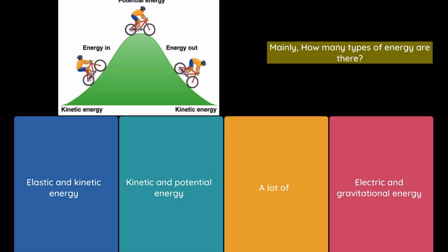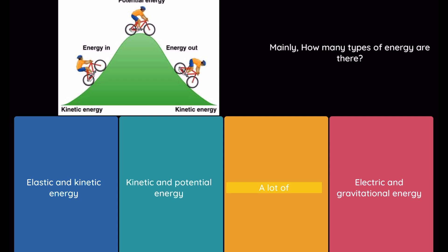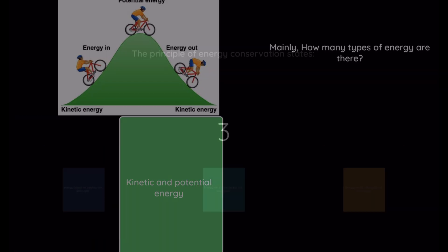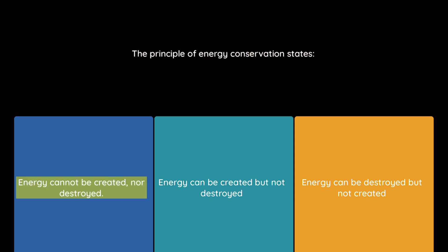Question: Mainly, how many types of energy are there? Option 1: elastic and kinetic energy. Option 2: kinetic and potential energy. Option 3: a lot. Option 4: electric and gravitational energy.